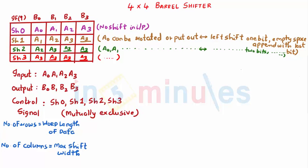Here it's a 4x4 barrel shifter where my inputs are A0, A1, A2, and A3. My outputs are going to be B0, B1, B2, and B3, and the control signals are going to be Shift 0, Shift 1, Shift 2, and Shift 3.